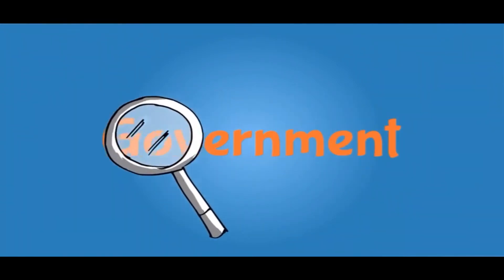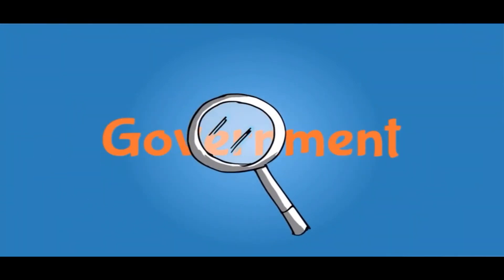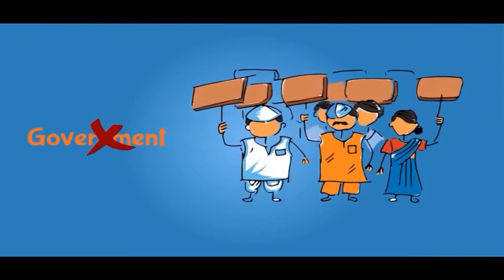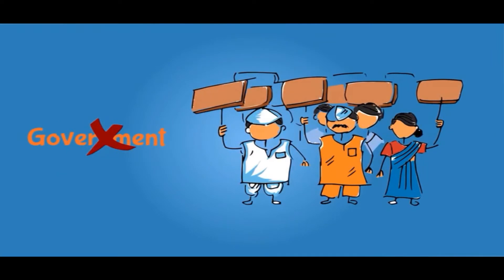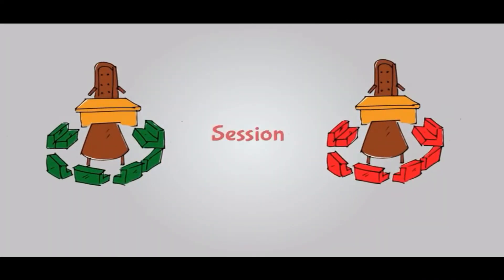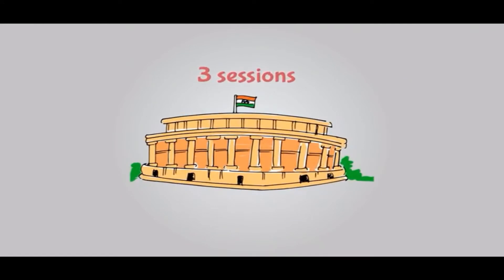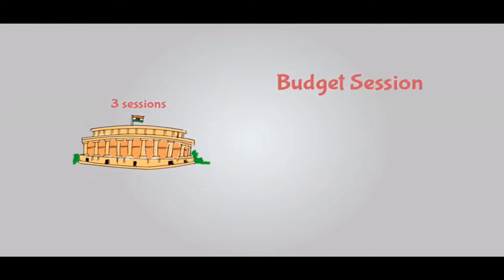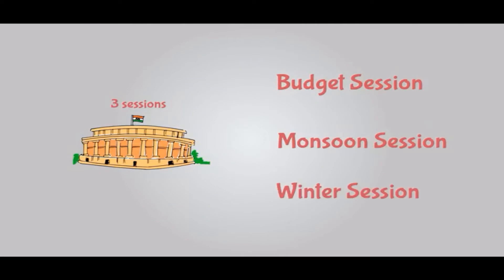So what does the Parliament do exactly? The Parliament checks to see if the government is doing a good job or not, and if they are not, they can raise a question against it. The period during which the House conducts its meetings is called a session. The Parliament conducts three sessions each year: the Budget Session, the Monsoon Session, and the Winter Session.